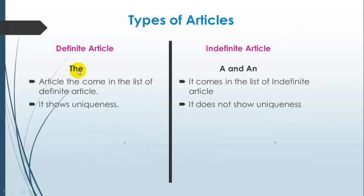A and an are indefinite articles. The is a definite article. The definite article shows uniqueness. The indefinite articles do not show uniqueness in our sentences.